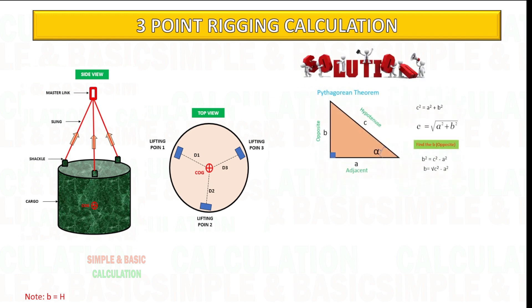Wire sling length is 6 meters and the distance of lifting point from the COG of the cargo is 3 meters. You can pause the video and follow the calculation below.